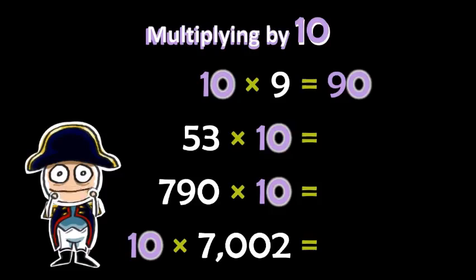53 times one was 53, so 53 times 10 is 530. The 50 became 500, and the three became 30. Do you see the pattern?